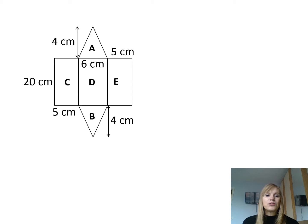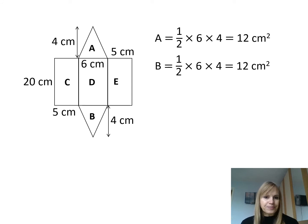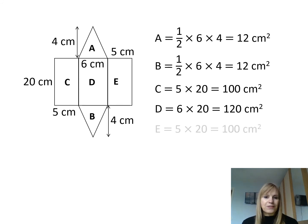So first of all I have two triangles I labelled A and B, and remember the area of a triangle is half times base times height, so A is half times 6 times 4, which is 12 centimeters squared. B will also be 12 centimeters squared because they're the same dimensions. For C I have a rectangle that is 5 by 20, which is 100. D is a rectangle with a base of 6 and height of 20, so 6 times 20, and finally E has dimensions of 5 times 20.